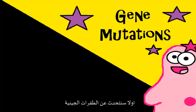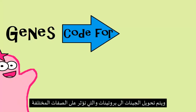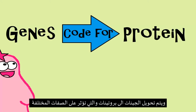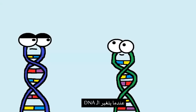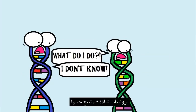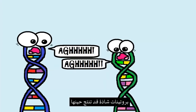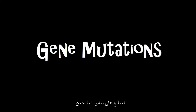First, we're going to talk about gene mutations. DNA makes up genes, and genes code for proteins that influence or make up different traits. So when DNA has changes — otherwise known as a mutation — then different proteins can be produced, and this can affect an organism's traits.